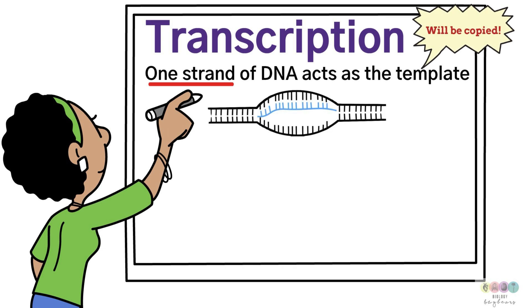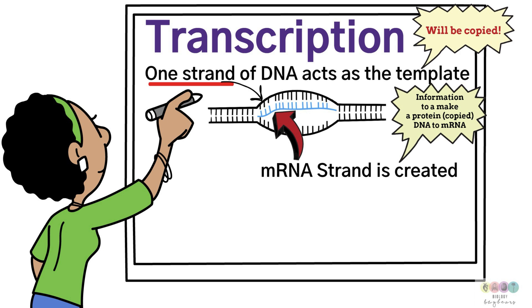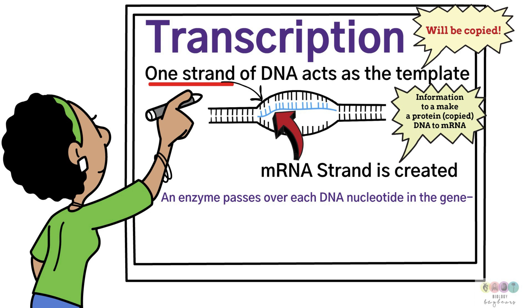The DNA unwound at the location of a particular gene. The two strands of DNA were separated by enzymes breaking those hydrogen bonds. This allows for one strand of the DNA to now act as a template and a messenger RNA strand will be created. It's taking the information on how to make that particular protein from DNA and copying it to messenger RNA. So the whole aim of transcription is to make messenger RNA.